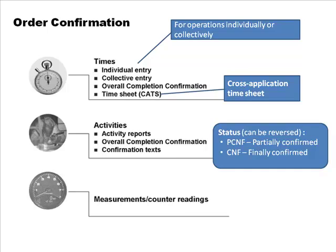There are two statuses for orders. Once you enter confirmation for at least one activity, the order becomes 'partially confirmed.' When all activities are confirmed, the order gets a status of CNF, meaning finally confirmed. These statuses can be reversed — for example, if you think the work is done but the machine starts having issues again, you go back and the status can be reversed.